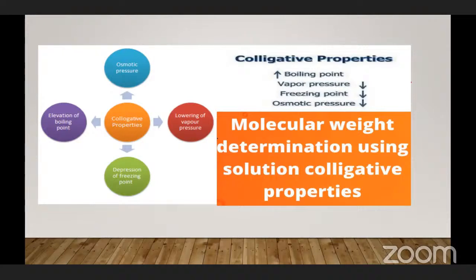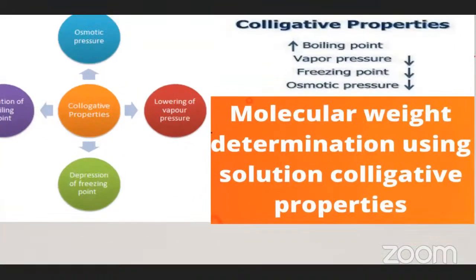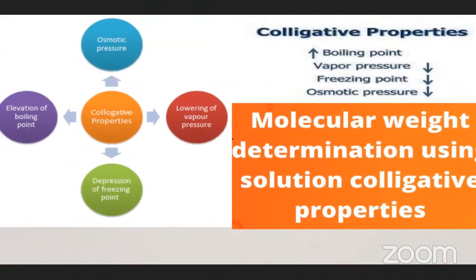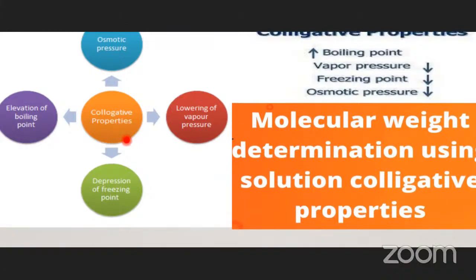We have seen methods of expressing concentration, and we also discussed the properties of solutions — for example, gas in liquid and liquid in liquid. We discussed Raoult's law, elevation in boiling point, and depression in freezing point. Those are all called colligative properties. Colligative properties are those which depend upon the number of particles and are irrespective of the nature of the particle. The four types are: lowering of vapor pressure, depression of freezing point, elevation of boiling point, and osmotic pressure.